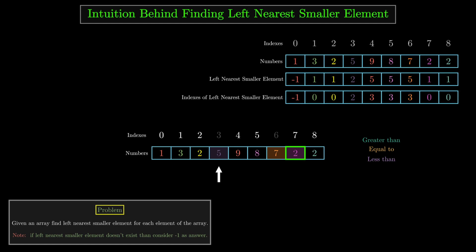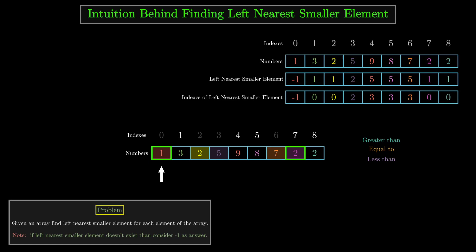Continuing, we will encounter elements greater than, equal to, or less than 5. We do not consider elements greater than or equal to 5, so we only consider elements less than 5. The next 2 is less than 5, but 2 cannot be the answer because it equals 2. So we only consider elements less than 2. Three is greater than 2 so we ignore it. One is less than 2, so we have found the answer — the LNS of 2 is 1.